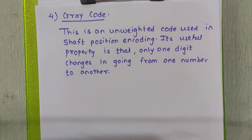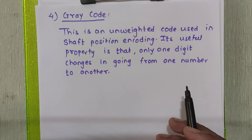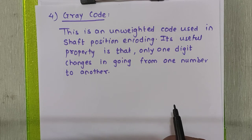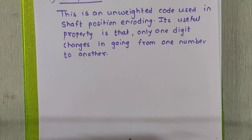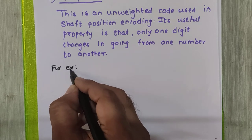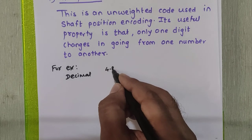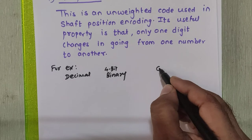The next code is gray code. This is an unweighted code used in shaft position encoding. There is a useful property of gray code: only one digit changes when you go from one number to the next number. Now we will see one example of how to convert a binary number to gray code, or how to obtain the gray code of any binary number.